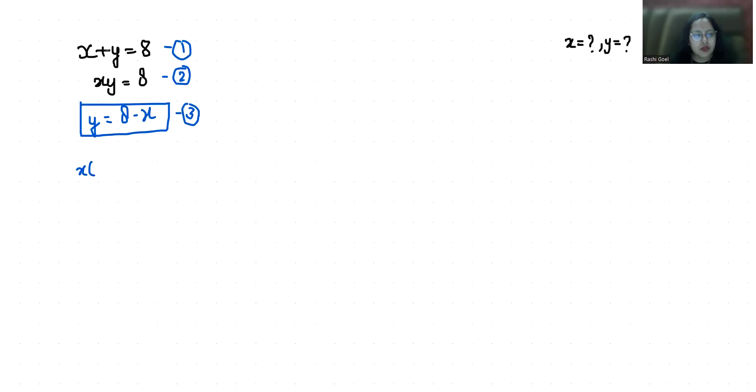So 8x minus x squared equals 8. Now I can write x squared minus 8x plus 8 equals 0. So x squared minus 8x plus 8 equals 0.